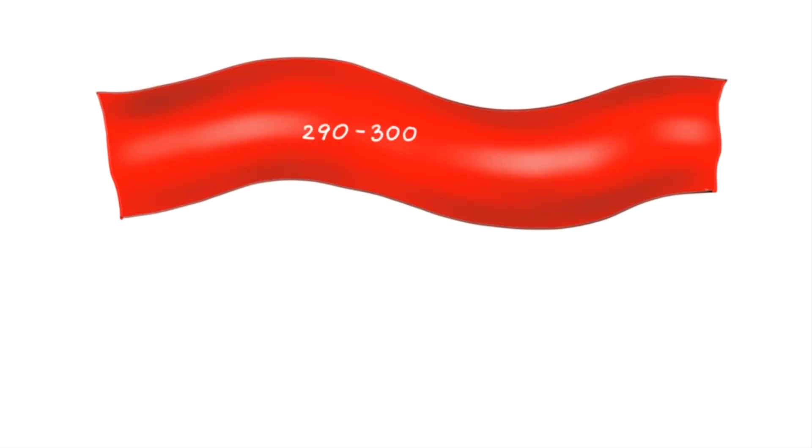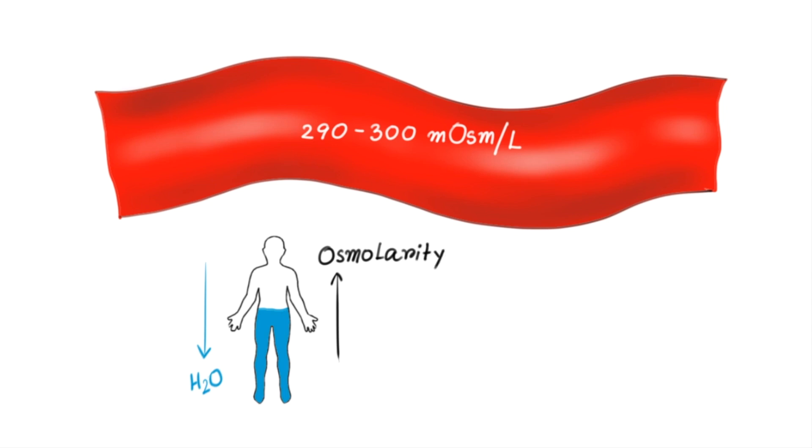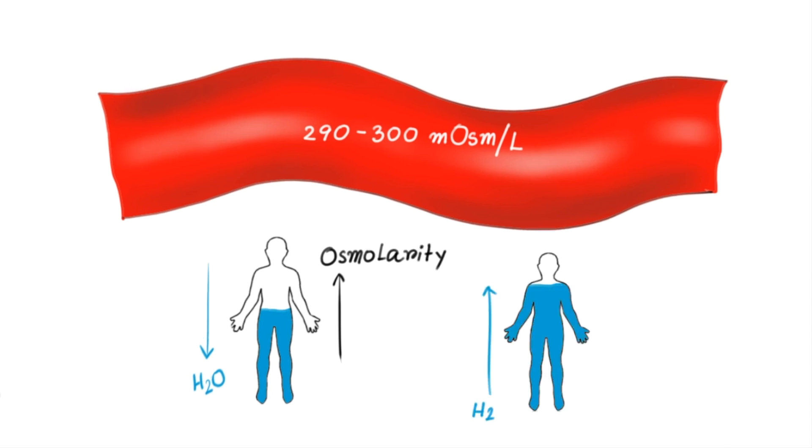As we know normal osmolarity of the blood is 290 to 300 milliosmol per liter. So if your body is deprived of water and blood osmolarity goes up, more and more ADH will secrete to keep the osmolarity around the normal value.